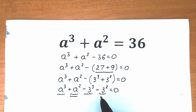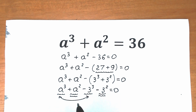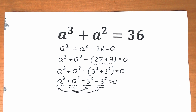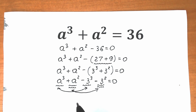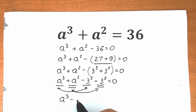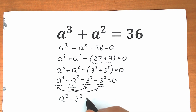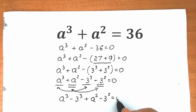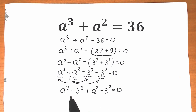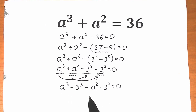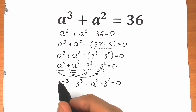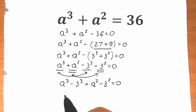Let's group the terms: group a³ with 3³, and a² with 3². So we have (a³ - 3³) + (a² - 3²) = 0. We just grouped the third-power terms together and the second-power terms together.